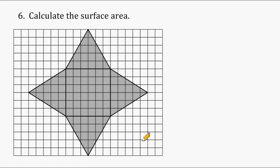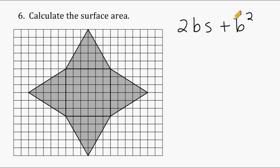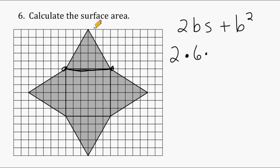This right here is the net of a square pyramid. We're going to use our formula: 2 times base times slant height plus base to the second power. We always start with the number 2. When it's in net form, we go to the bottom of one of the triangular surfaces and measure the base of that triangle — from here to here is a distance of 6. The slant height, from the top of a triangular surface down to its base, is a distance of 5.